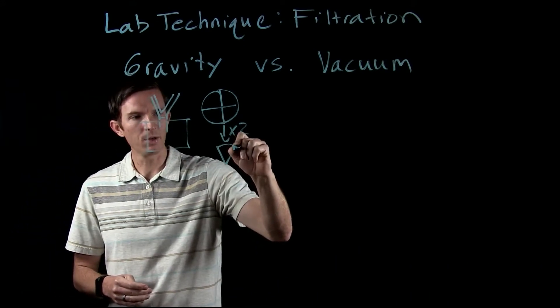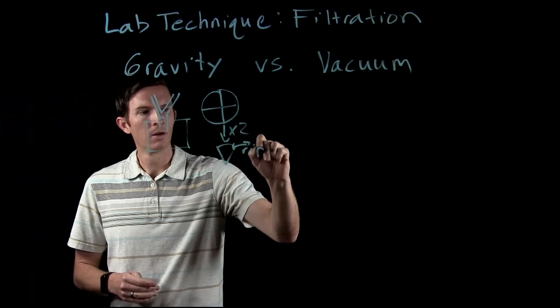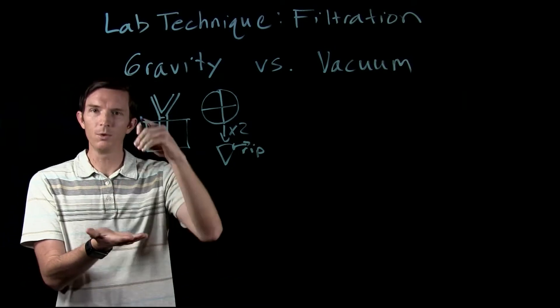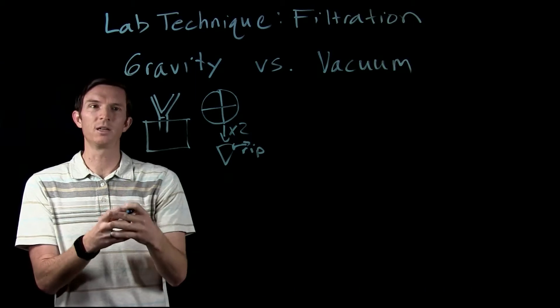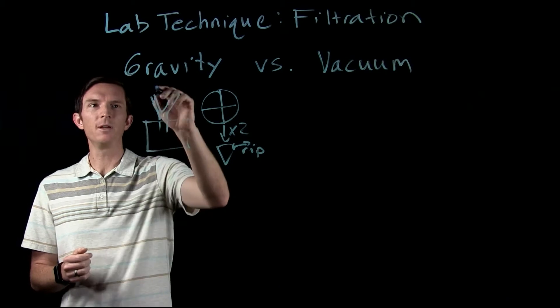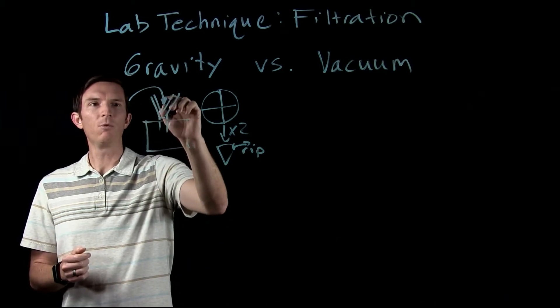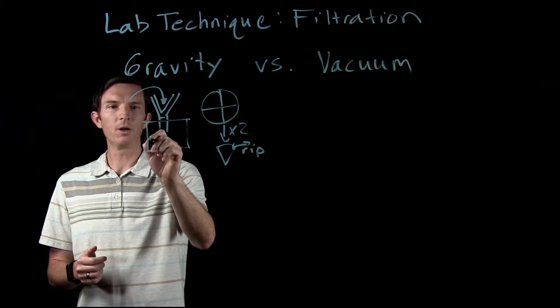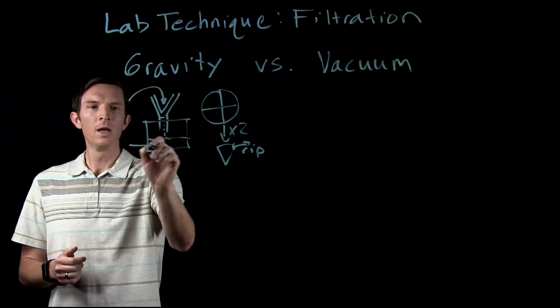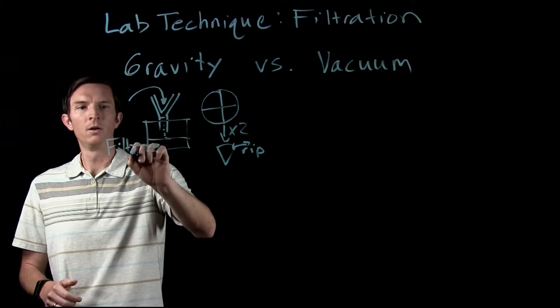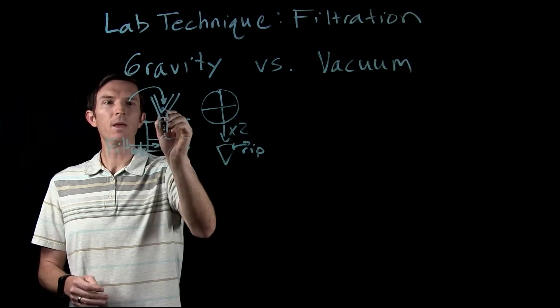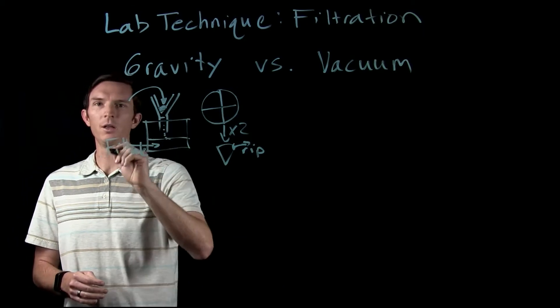Usually what we'll do is rip off a little piece and what that does is that allows our funnel to fit really well when we put our filter paper in there and it sticks. So we now have our funnel here sitting with our filter paper inside of it. Then we'll pour our liquid through there. We'll see the liquid will filter through and we will have our filtrate here. That's what goes through our filter paper, and then we'll have some solid here.